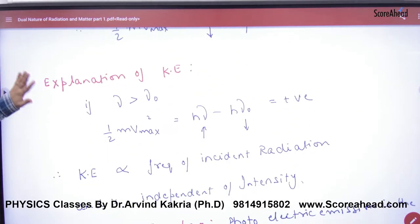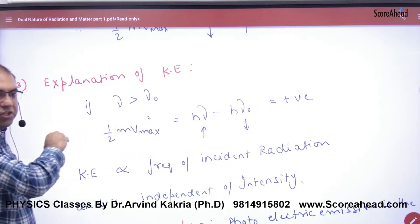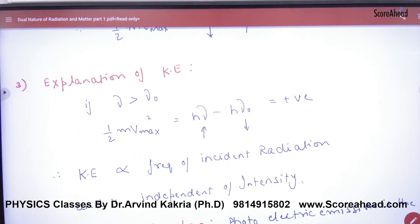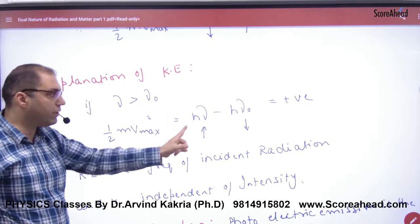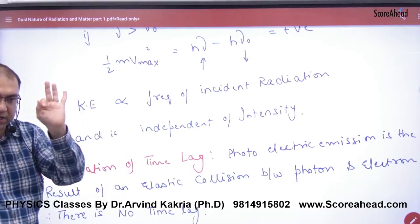The third law explains kinetic energy. If the frequency is greater than the threshold, kinetic energy is positive and emission occurs. Kinetic energy is proportional to the frequency of the photon and is independent of intensity.